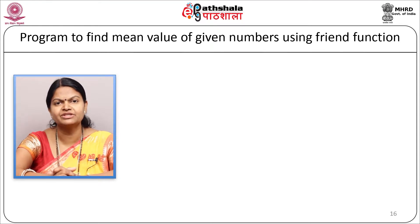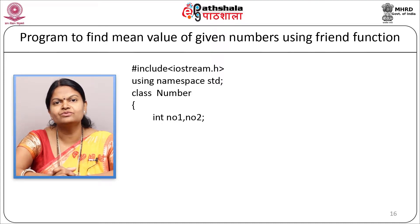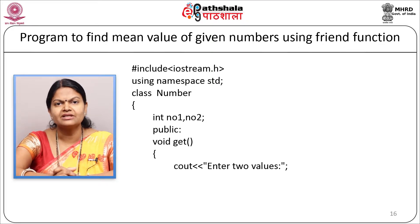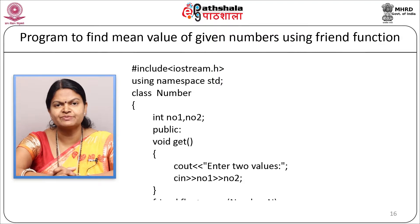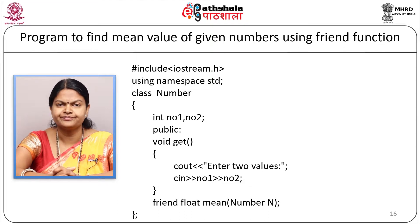Program to find the mean of given numbers using friend function. Class `number` has private integers `number1` and `number2`. In the public section, member function `void get()` takes two numbers from the user via `cin`. The friend function is declared as `friend float mean(number n)` - friend keyword, return type float, function name mean, argument is an object of class number. Outside the class, the friend function is defined as `float mean(number n)`, returning `(n.number1 + n.number2) / 2`.